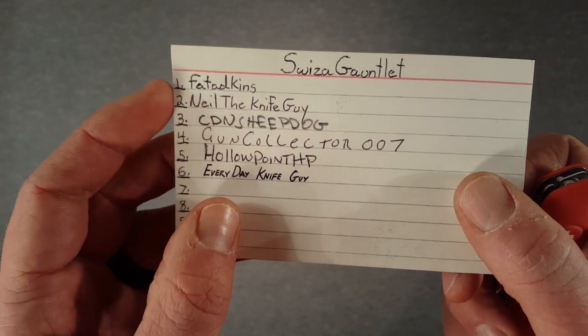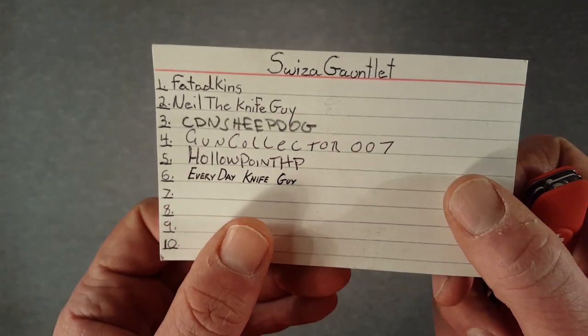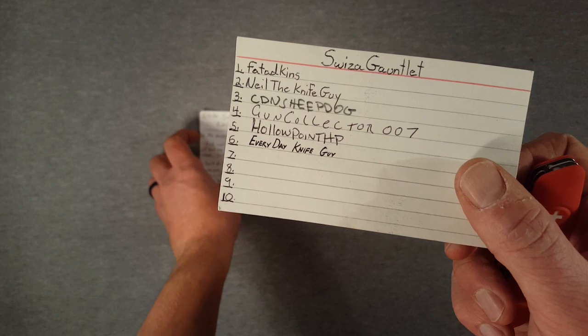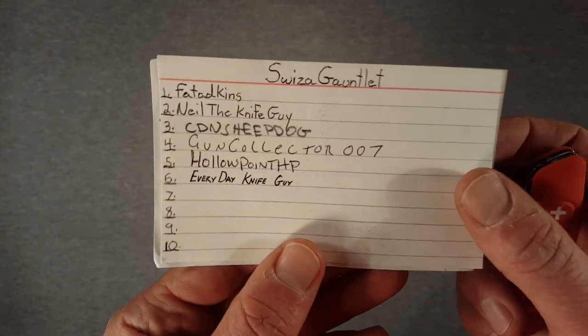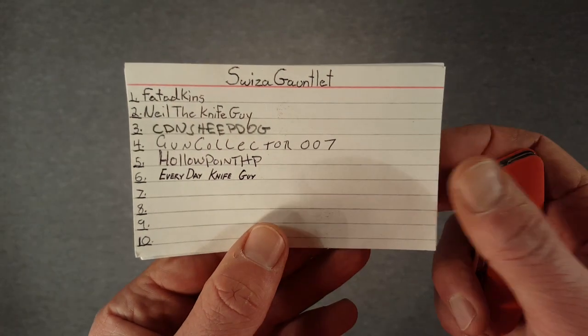So the idea is he did a review on it. He sent it to Neil, Canadian Sheepdog, Gun Collector, Hollow Point, now me. And each one of us does a video on it. We basically do a review on it and send it on to the next person. Once it gets to number 10, it's going to go back to him and it'll be his knife, of course.